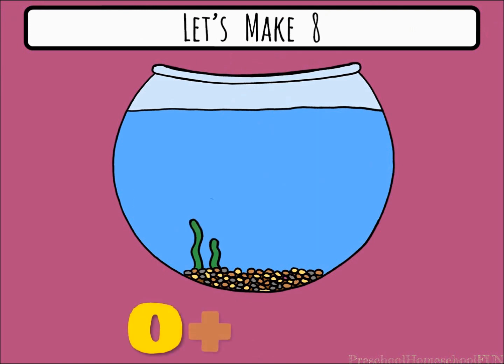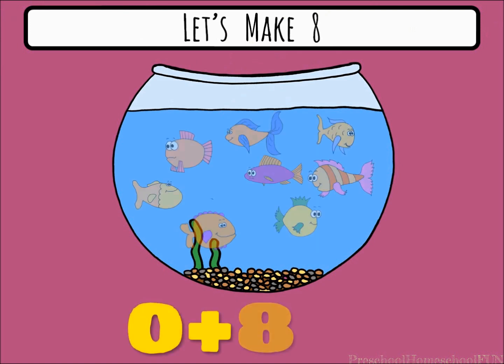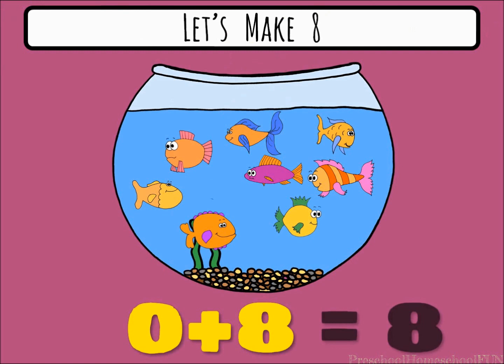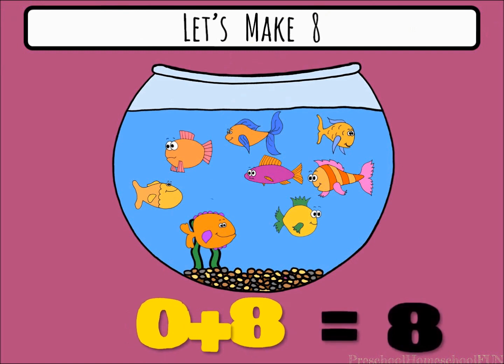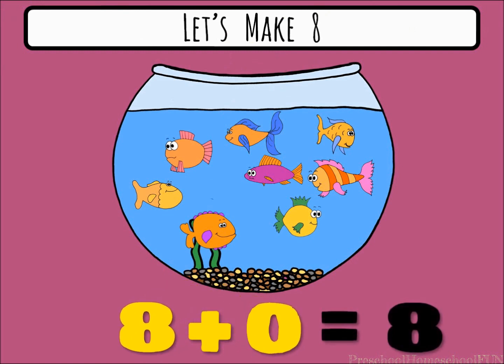We had zero fish and we added eight. Zero plus eight equals eight. If we add zero more fish, we have eight plus zero equals eight.